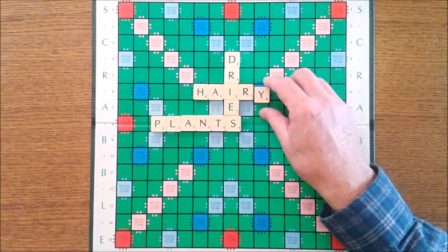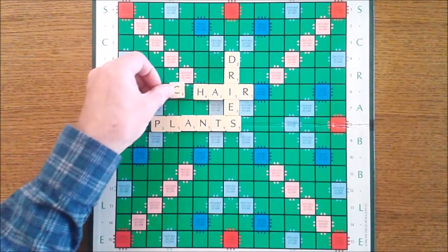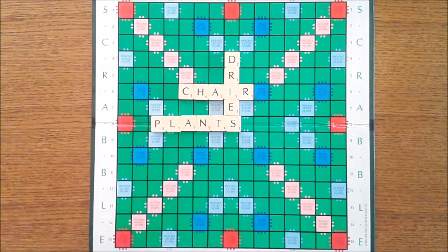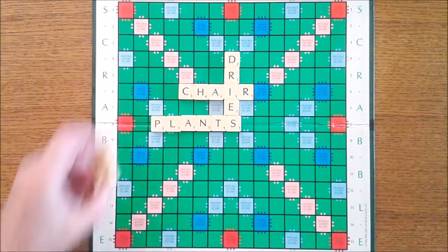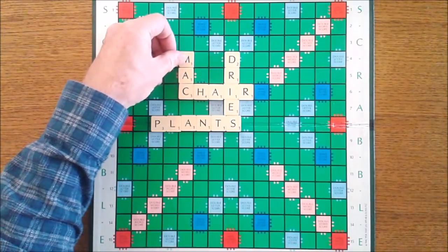Instead of a letter at the end, how about a letter at the beginning? Chair would fit nicely there, especially if you can make a word as well. Mac would score 24 points.